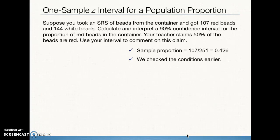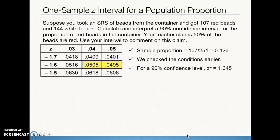Back to the bead example: a simple random sample from a large container gave 107 red beads and 144 non-red beads. We want to calculate and interpret a 90% confidence interval for the proportion of red beads. The teacher claims 50% of beads are red. Our p-hat is 0.426. For 90% confidence, 1 minus 0.90 leaves 10%, split as 0.05 on each tail, giving Z-star of 1.645.